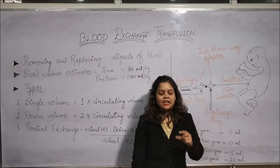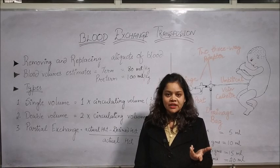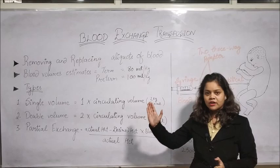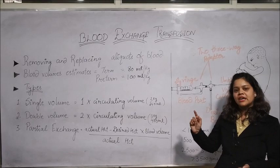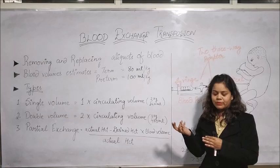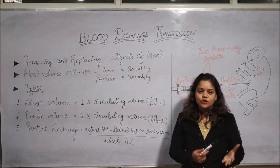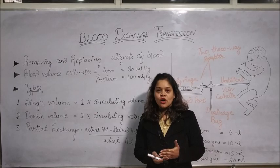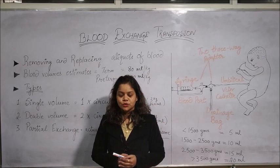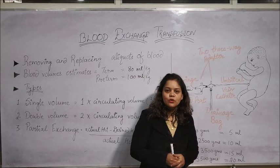Fresh frozen plasma is given at midway through the procedure and after completion of the procedure, approximately 10 ml per kg, given over 15 to 20 minutes. After completion of the procedure, a proper blood exchange transfusion record should be maintained, recording vital signs and the amount of blood withdrawn and given to the baby, so there is no discrepancy. The baby should be placed under phototherapy and vital signs assessed properly. Serum bilirubin level should be monitored post-procedure, repeated after 6 hours.